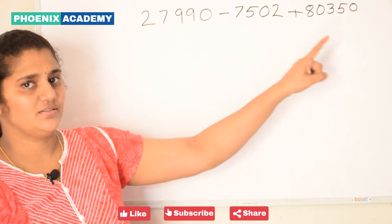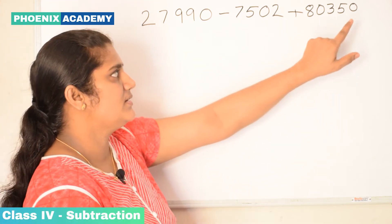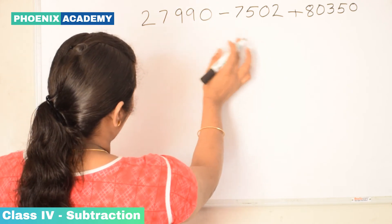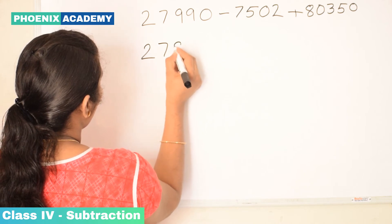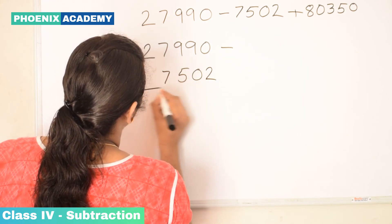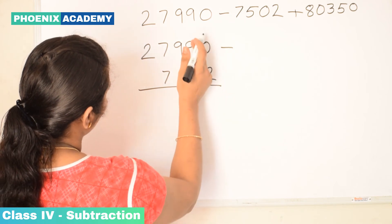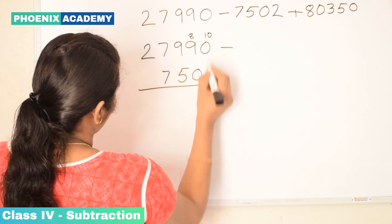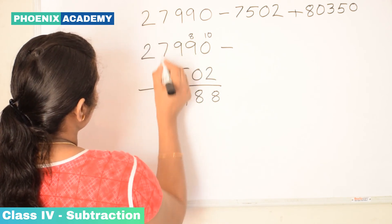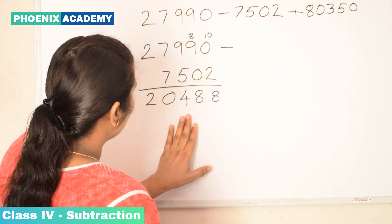Now we are going to do addition and subtraction together. 27,990 minus 7,502 plus 80,350. Let's subtract 7,502 from 27,990 first. Written in column form: 0 minus 2 — since 2 is bigger, we borrow from the tens place. 9 becomes 8, 0 becomes 10. 10 minus 2 is 8. 8 minus 0 is 8. 9 minus 5 is 4. 7 minus 7 is 0. 2 minus 0 is 2. So we get the difference of these two numbers.